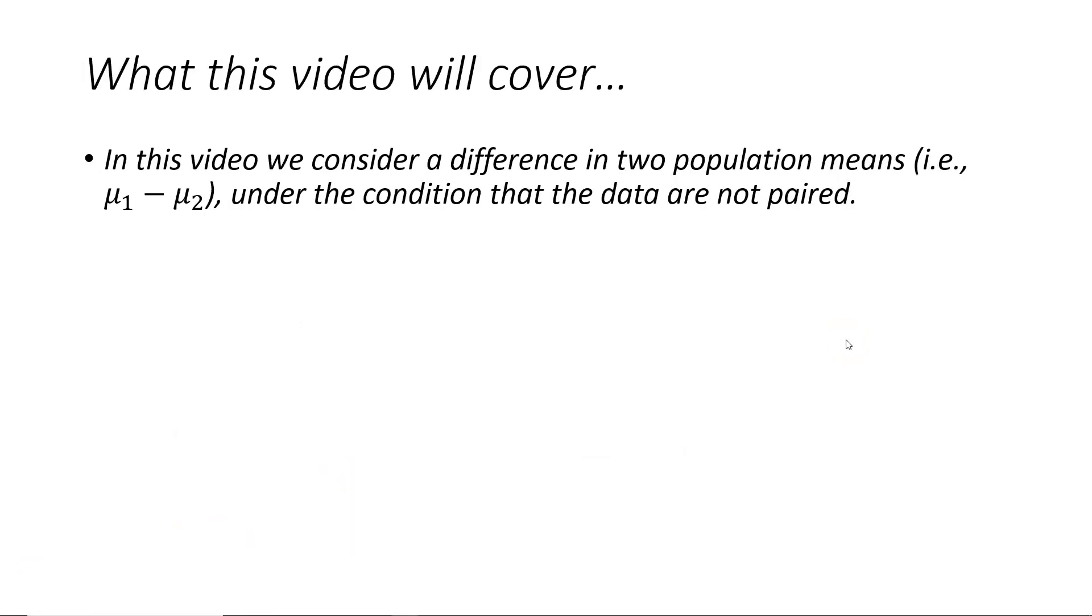In this presentation video, we are going to consider a difference in two population means, that is, μ₁ minus μ₂, under the condition that the data are not paired. You may recall that in section 7.2, we covered the case where we had paired data.